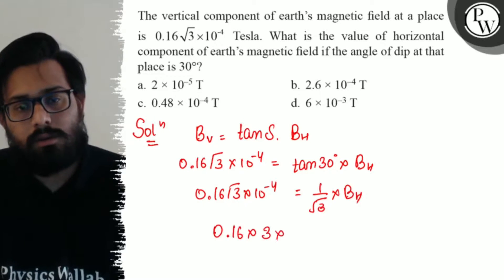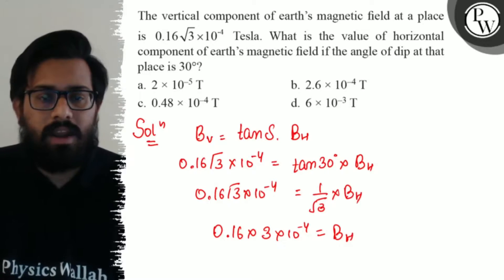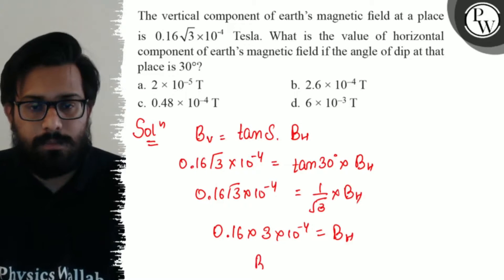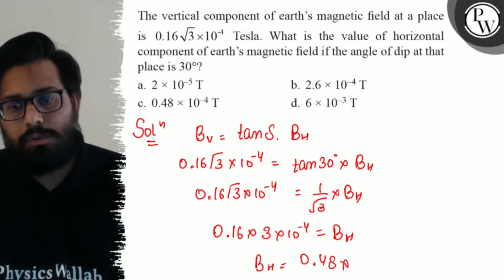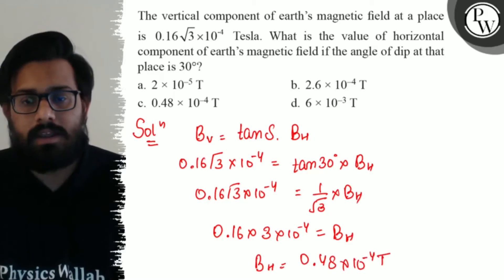Dividing by tan 30° gives us the value of Bh. Root 3 times root 3 simplifies the calculation. So here Bh value is 0.48 × 10^-4 Tesla.